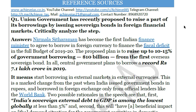We have started with the introduction that Nirmala Sitharaman, the Finance Minister of India under NDA 2, became the first finance minister to agree to borrow in foreign currency to finance the fiscal deficit in the full budget of 2019–20. The proposed plan is to raise 10 to 15 percent of government borrowing, which amounts to approximately 10 billion dollars, from the first overseas sovereign bond. The central government wants to raise a total of ₹7.1 lakh crore, of which 10 to 15 percent will be raised externally.